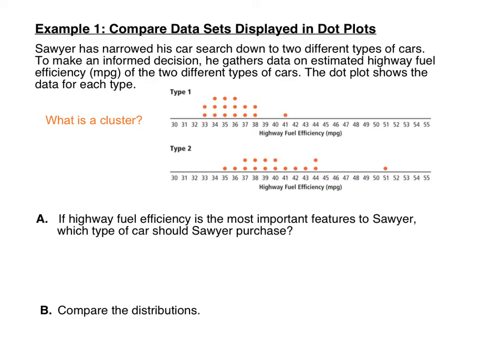Remember from 11.1, the cluster is just the area where most of the data is gathered. We can see here that in type 1, the cluster is mainly from 33 to 38. Type 2 is a little bit more spread out, but the data is mostly clustered from 37 to 40. Really all of the data here is pretty close together — 35 to 44 — so I'm going to call that the larger cluster of 35 through 44.